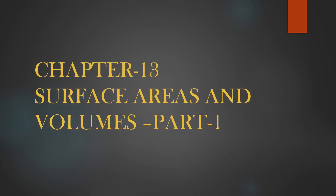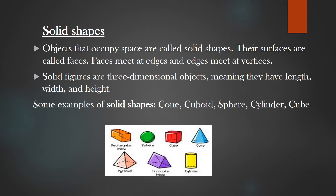Good morning children. Today we are going to start a new chapter: Surface Areas and Volumes. In this chapter we will be studying about solid shapes, their surface areas and volumes. We have learned about plane figures like rectangle, square, circle, etc. and how to find their perimeter and area. Here let us learn about solid shapes and how to find their surface areas and volume. Objects that occupy space are called solid shapes. Their surfaces are called faces, the faces meet at edges, and edges meet at vertices. Solid figures are three-dimensional objects meaning they have length, breadth and height.